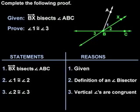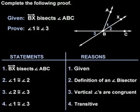Therefore, since angle 1 is congruent to angle 2 and angle 2 is congruent to angle 3, we can say that angle 1 is congruent to angle 3 by the transitive property.